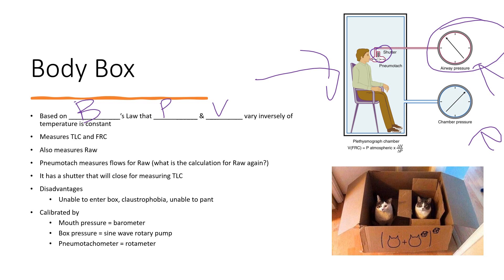We can trend this data over time — if a patient comes in every six months or yearly and their volume keeps increasing, we may need to be more aggressive with disease management. The body box measures total lung capacity and functional residual capacity. If both are increased, that can be a sign of air trapping, as seen in COPD, emphysema, and chronic bronchitis. The body box also measures airway resistance, which reflects how much resistance there is to gas flowing in and out.